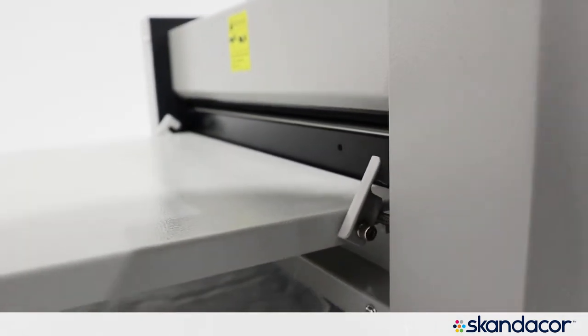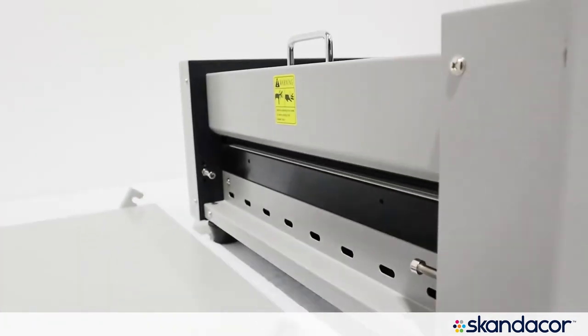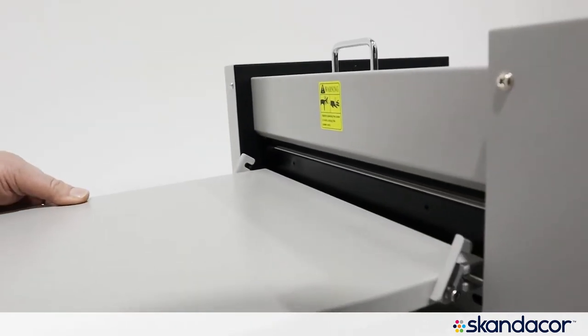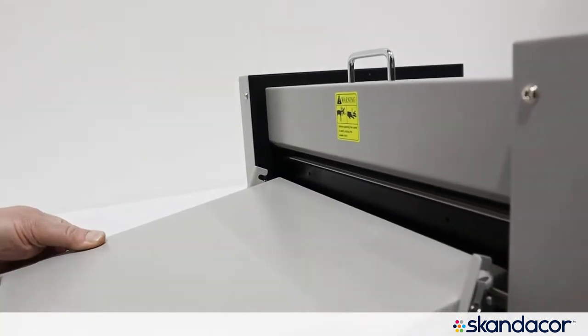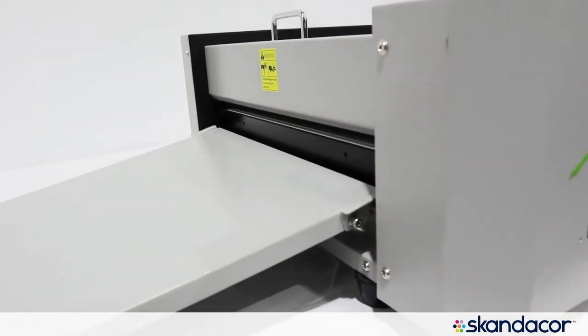You just drop it down over these two screws here and pull it forward away from the machine just a little bit and push the locking levers down and that tray is now locked in place.